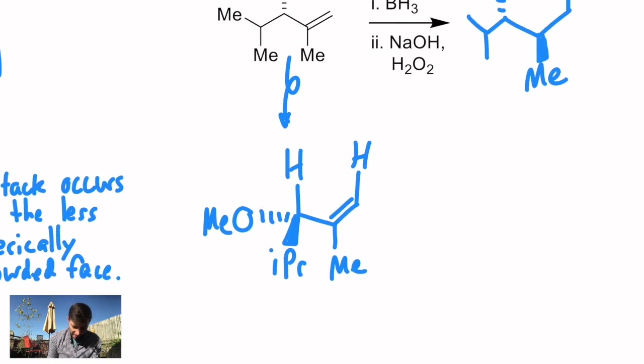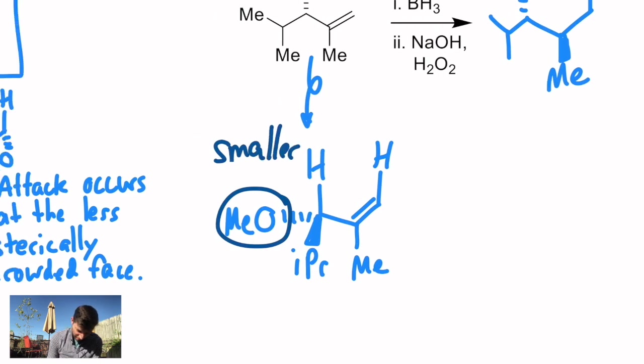My methoxy is now pointing in the back of the screen, and we have an isopropyl coming out toward us. So we are competing between methoxy and isopropyl. Isopropyl is not as big as tert-butyl, but it is quite bulky, so I predict that methoxy is going to be smaller. In fact, let's highlight that smaller group. I could go back and do that in the first one too. Methyl is clearly smaller.